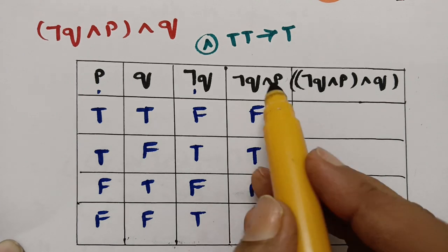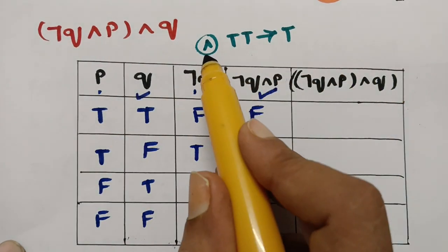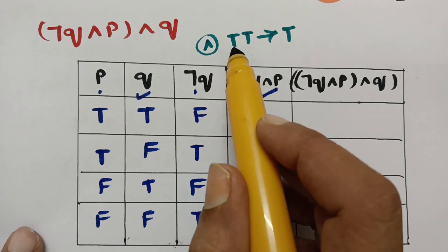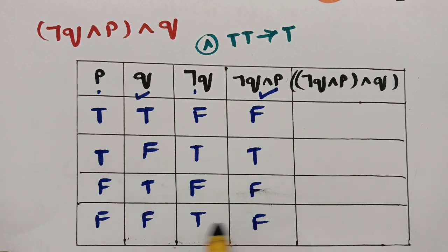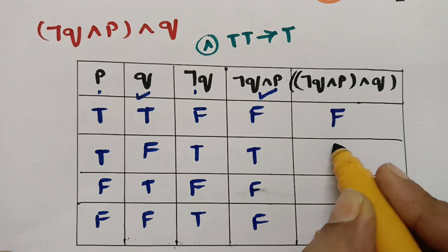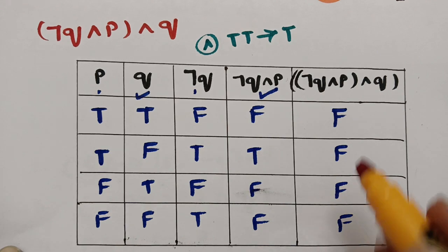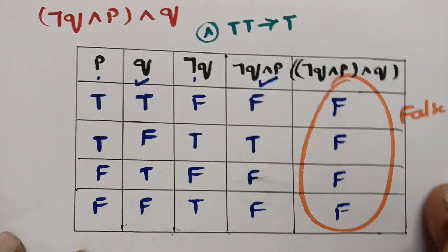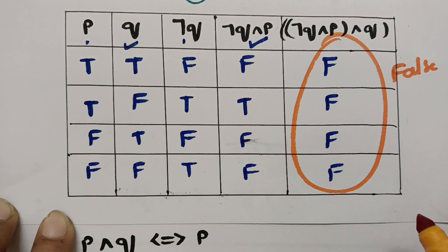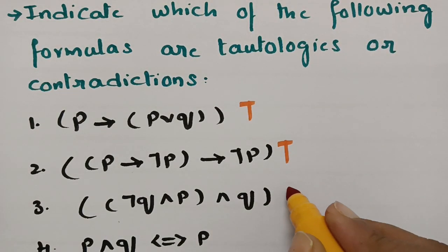Now applying conjunction between (¬Q ∧ P) and Q: for and, two trues give true. There is no true-true pair here, so we write false, false, false, false. Since the composition table is always false, we say this is a contradiction.